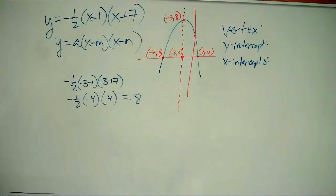So my vertex is the point negative three comma eight. All right, I am rocking and rolling now. I am just about done because now all I need is the y-intercept.